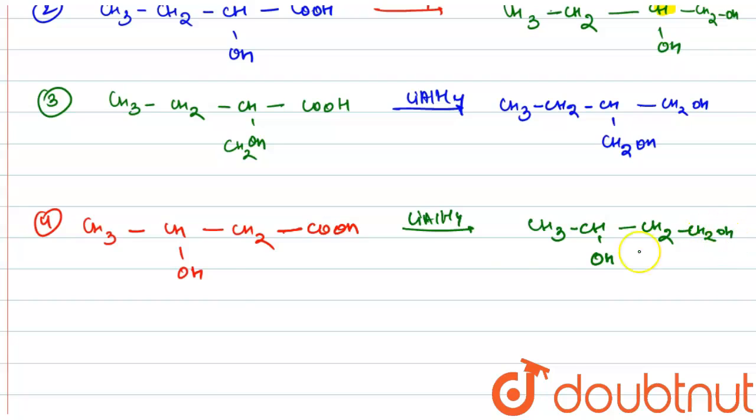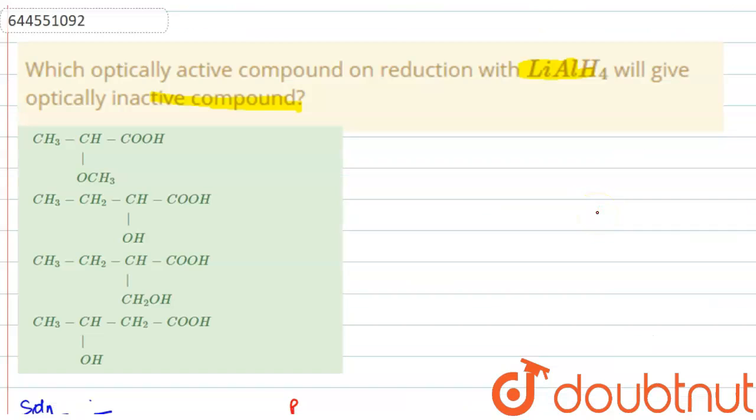This is our final product and this carbon is a chiral carbon because all the four groups are different and thus an optically active compound. So only the correct option is the third option. So this is our correct option because on reacting with LiAlH4 this compound gives an optically inactive compound.